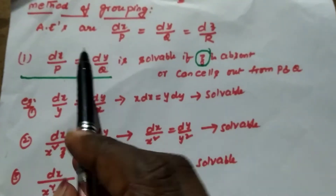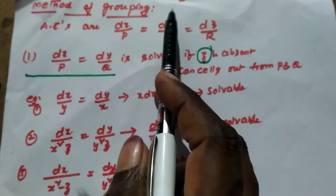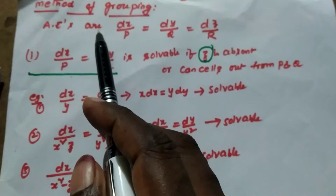In this video we will discuss the method of grouping to solve the linear partial differential equation. For this we consider the auxiliary equations dx by p equal to dy by q equal to dz by r.